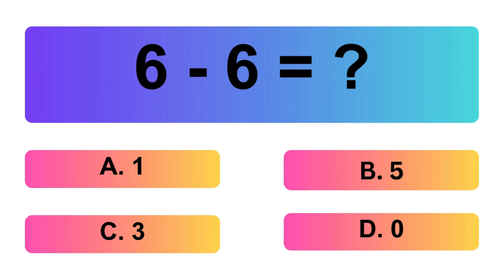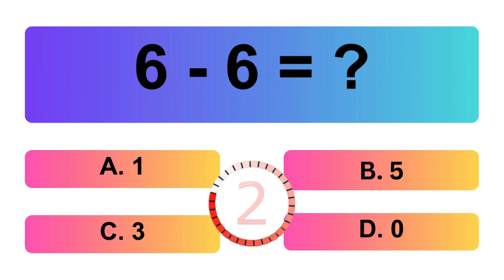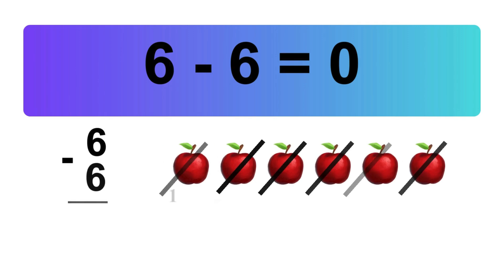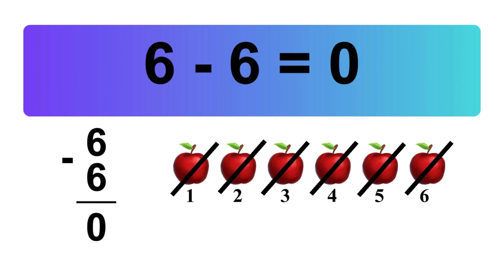6 minus 6 is equal what? Let's count it: 0. So, the answer is 6 minus 6 is 0.